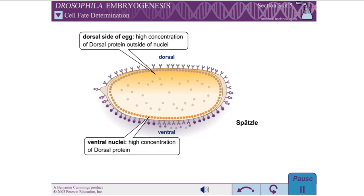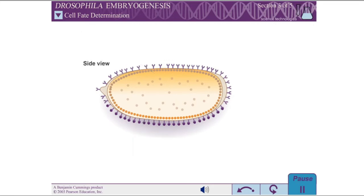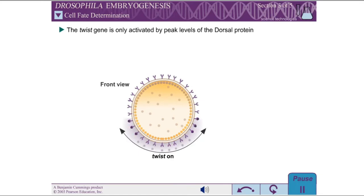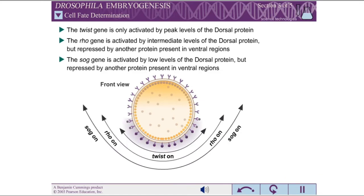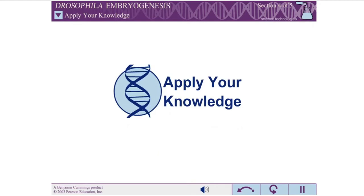This may seem confusing since Dorsal protein is found in ventral nuclei. The name "Dorsal protein" comes from the fact that the concentration of Dorsal remains high at the dorsal side of the egg, since none of the Dorsal protein has entered the dorsal nuclei. The activation of some genes targeted by the Dorsal protein requires peak levels, while others can be activated by intermediate and low levels. Other proteins can also act on the genes targeted by Dorsal, leading to complex patterns of expression.